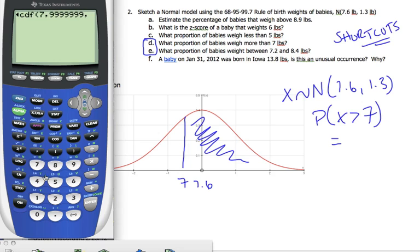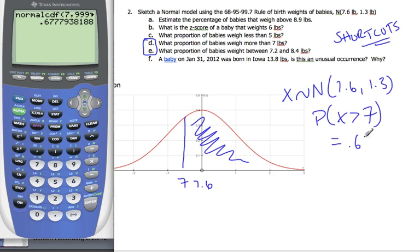I'm going to go comma, mean 7.6, comma, my standard deviation is 1.3. And so, I've just told the calculator how to calculate the Z score, and then it calculates it automatically, and I get the same answer as before, the 0.677.